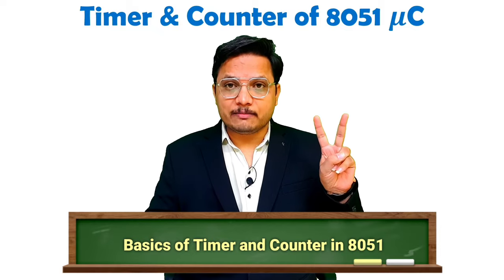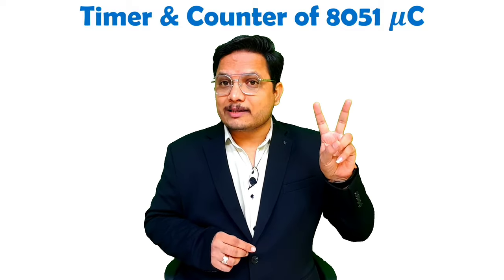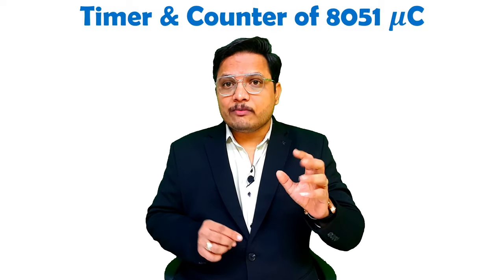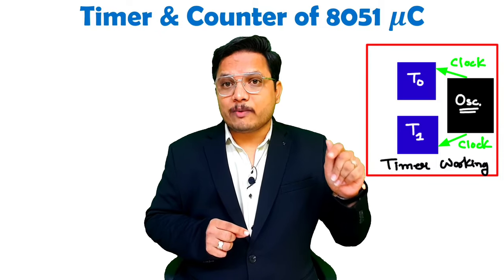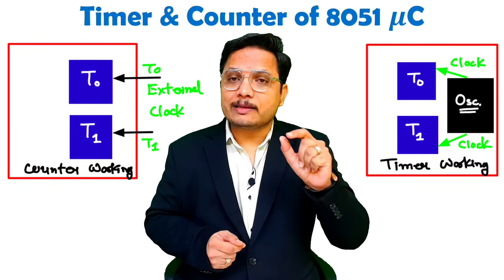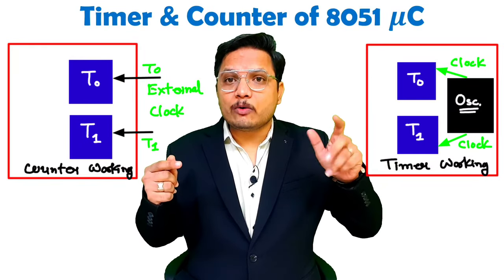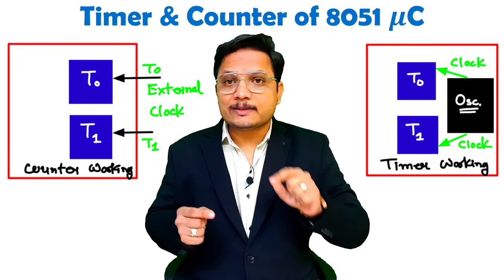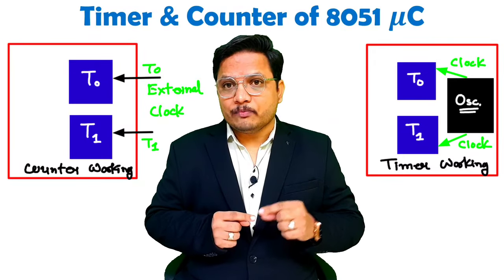With 8051 we have two timers of 16 bits, and both of these timers are up counters. These two timers can be used as a timer as well as a counter. When these timers are driven by the internal clock, they are working as a timer. When driven by an external clock, they are working as a counter — counting how many external clock pulses are coming in.